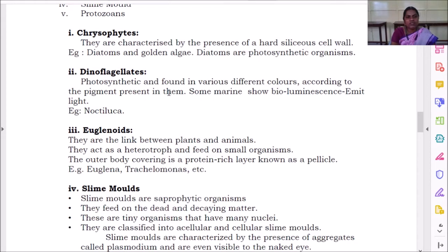These dinoflagellates are photosynthetic and found in various different colors according to the pigment present in them. So it will reflect the pigment what is present there. Some marine organisms show bioluminescence and emit light. Hope you remember this too. In the last class, I have shown the images of these dinoflagellates. Example is noctiluca.